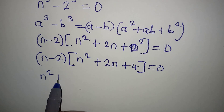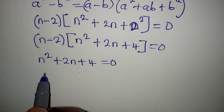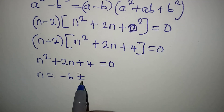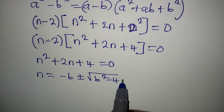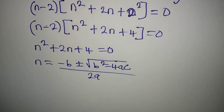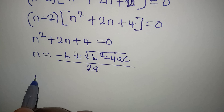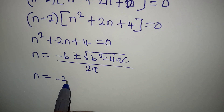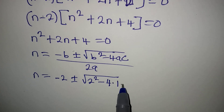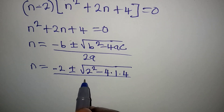So I have n squared plus 2n plus 4 equal to 0. This is now a quadratic equation, and we can use the formula to solve this. The formula is n equal to minus b plus or minus square root of b squared minus 4ac, all over 2a. Remember that the unknown variable here will be the subject of the formula. So from here, b is 2, giving us minus 2, plus or minus square root of 2 squared minus 4 times a times c, and our c is 4. So I will divide this by 2 times 1.